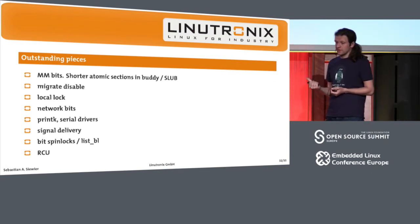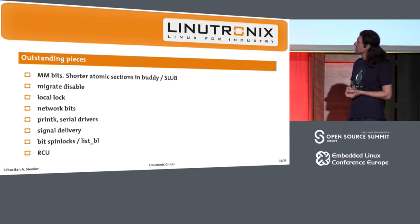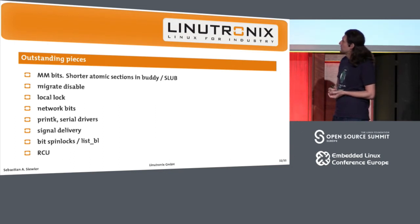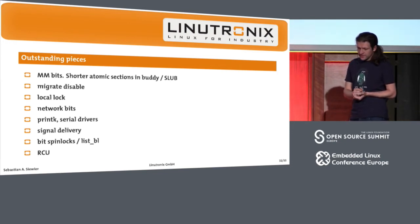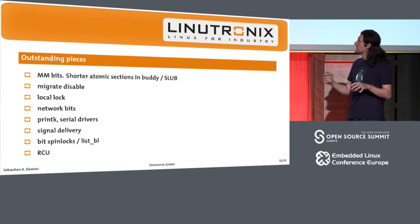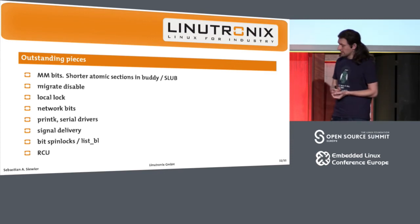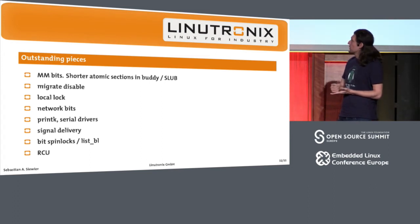We have broken locks, and the reason for that is the replacement of every preempt-disabled section. It's basically a spinlock which gets converted. We're trying to get those upstream at some point. We also have networking bits — networking bits aren't RT-specific, just small pieces that break here and there, like locks that are acquired one way and released another. We also have the printk interface, which comes along with zero-copy console drivers.